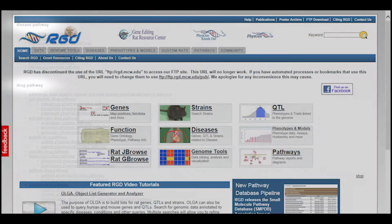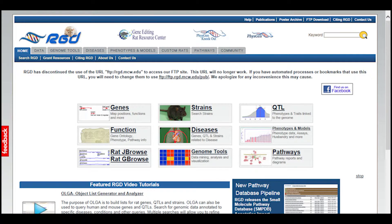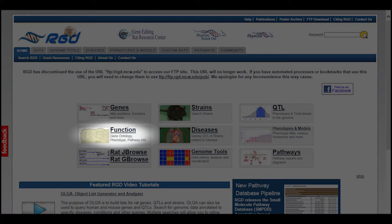Alternatively, you can access the pathway diagrams through the pathway ontology, RGD's controlled vocabulary of pathway terms. From the RGD home page, you can access all of the ontologies in use by RGD by clicking the button labeled function.